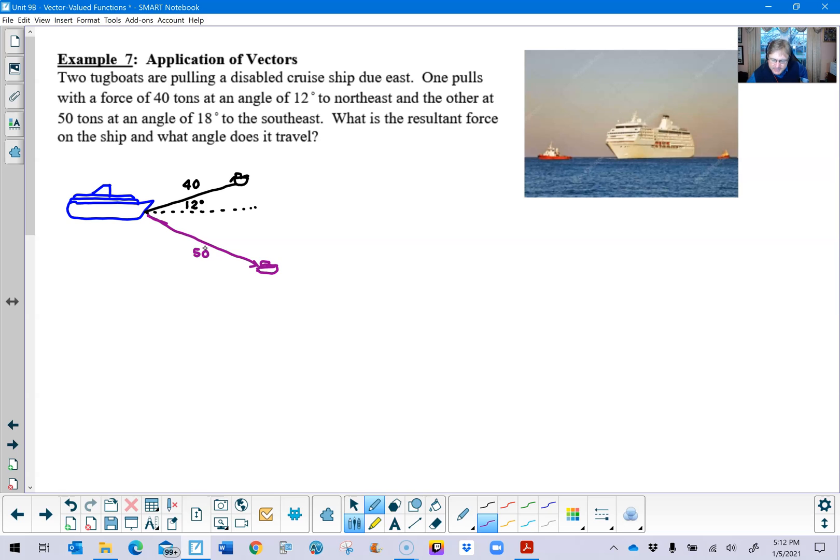Well we have another tugboat here, the purple tugboat, that's pulling at an angle of 18 degrees to the southeast so that's a little bit wider angle and this vector that that boat is operating on is also a little bigger at 50 tons. Now here's the tricky situation: if we put 18 degrees here it's not incorrect because we're just using that as a measurement in relation to that dashed horizontal line, but when it comes time to set up our vector equation we need to rethink what that 18 degrees means.